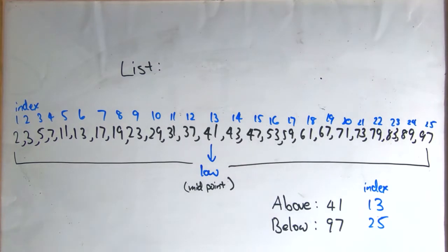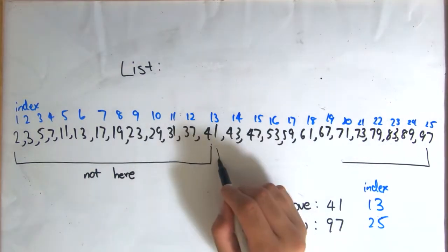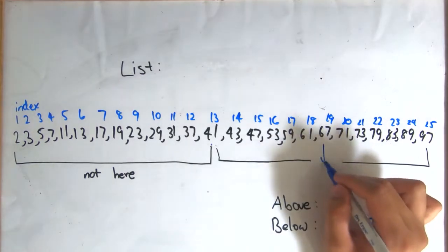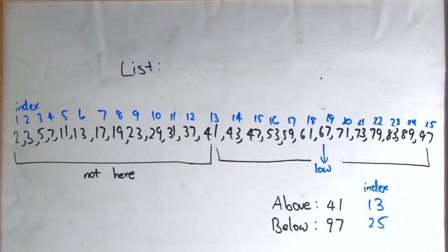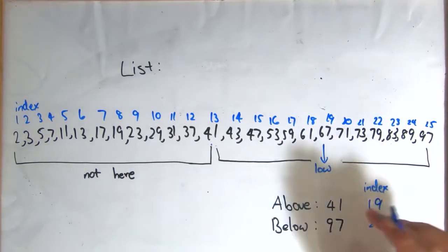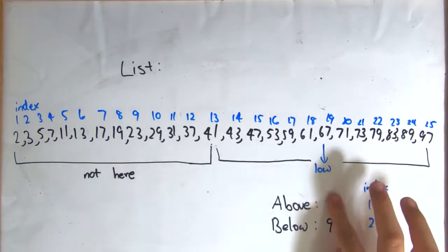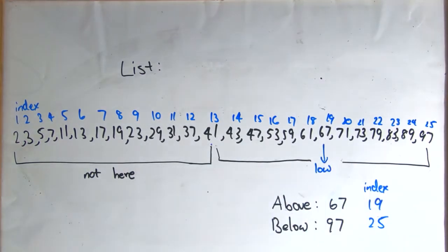So we don't have to worry about any of the numbers smaller than 41 at this point. Now let's look at the midpoint between the 13th and 25th number, which turns out to be 13 plus 25 over 2 is the 19th number on the list, which is 67.